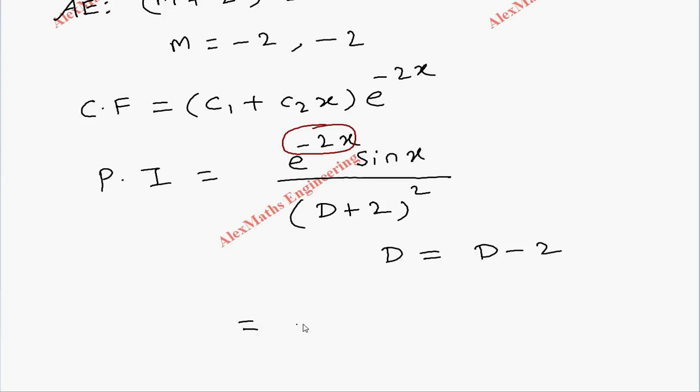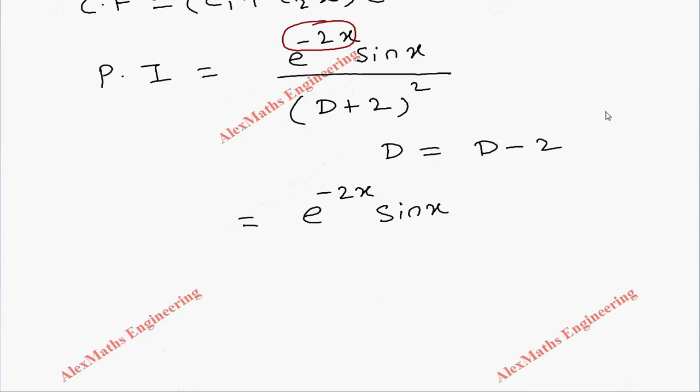Therefore e^(-2x) sin(x) divided by (D-2+2)². So these two will get cancelled.